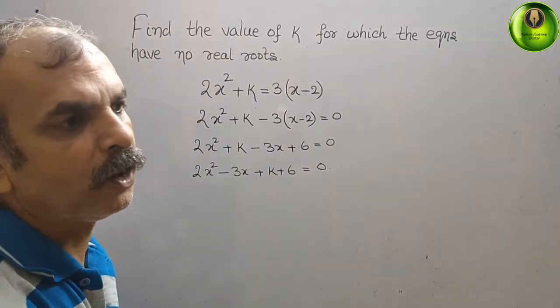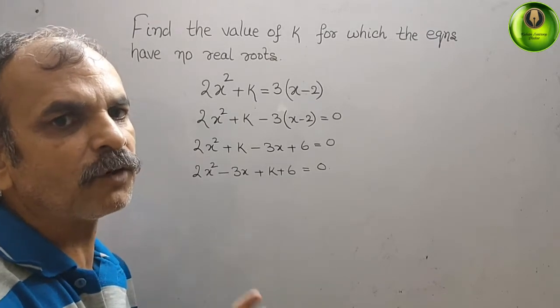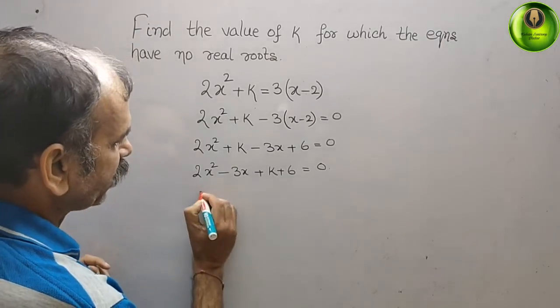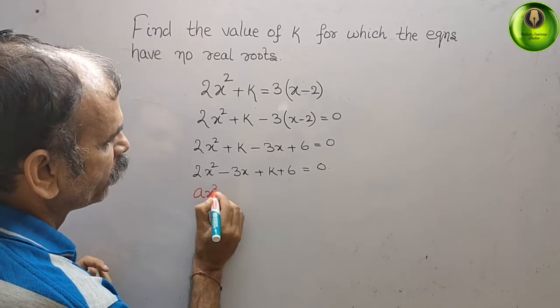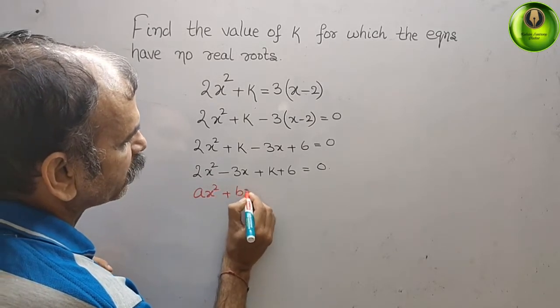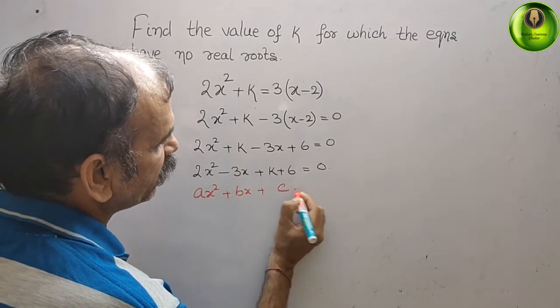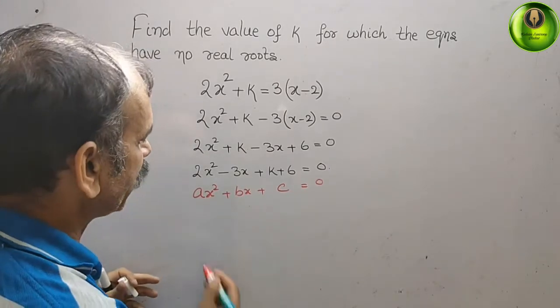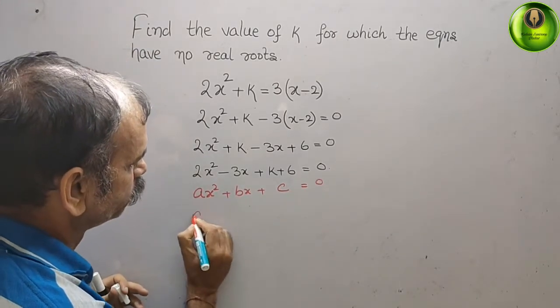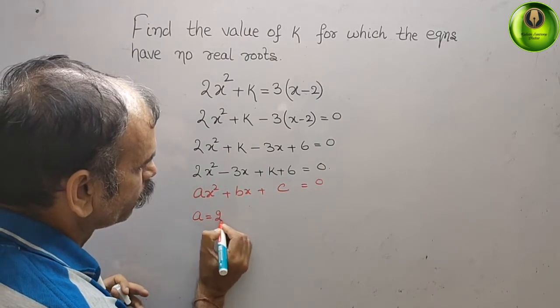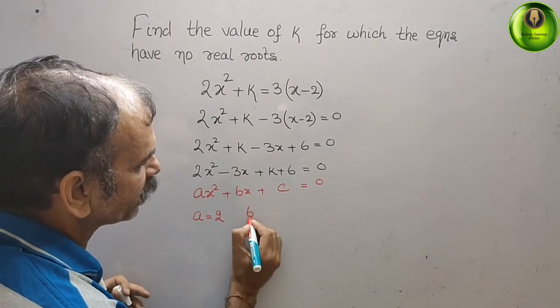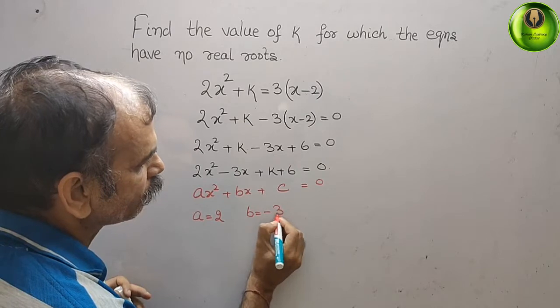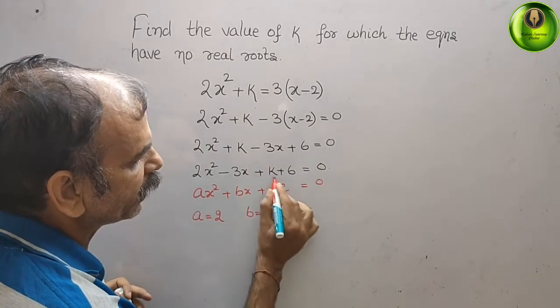We'll write the standard formula of quadratic equation: ax² + bx + c = 0. If you compare it, a = 2, b = -3, and c = k + 6.